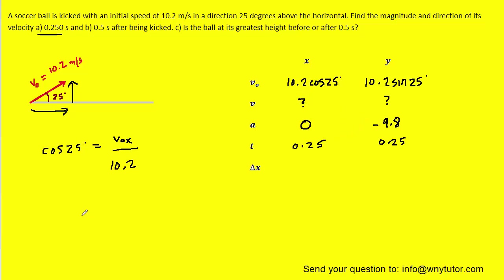Let's find the x-direction final velocity first. Using the kinematics equation, the final velocity in x equals the initial velocity in x plus acceleration times time. Since acceleration in x is 0, that term drops away, and the final velocity in x equals the initial velocity in x. So we can fill in 10.2 cos 25 for the final velocity in the x direction.